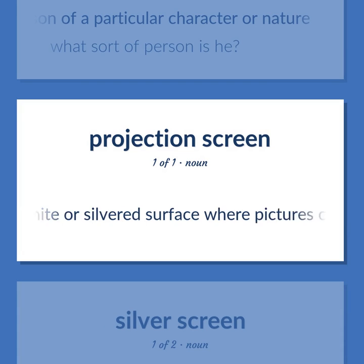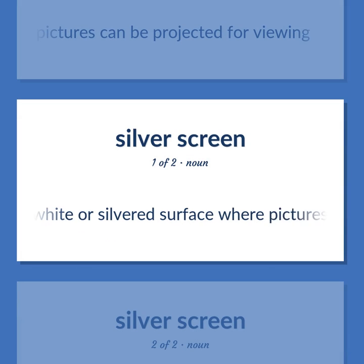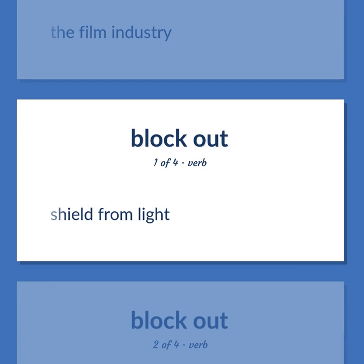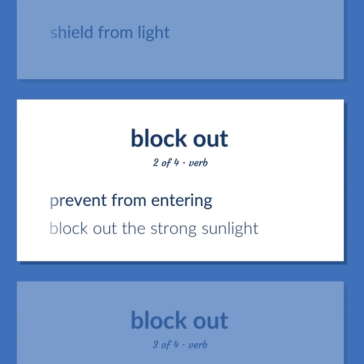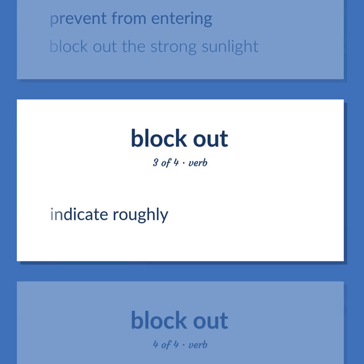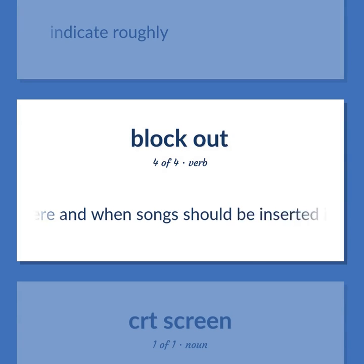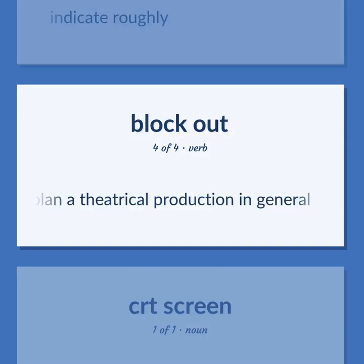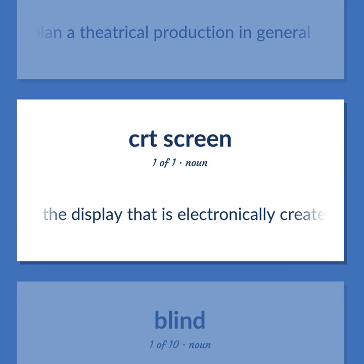A wide or silvered surface where pictures can be projected for viewing. The film industry. Shield from light. Prevent from entering. Block out the strong sunlight. Indicate roughly. Plan where and when songs should be inserted into a theatrical production, or plan a theatrical production in general. The display that is electronically created on the surface of the large end of a cathode ray tube.